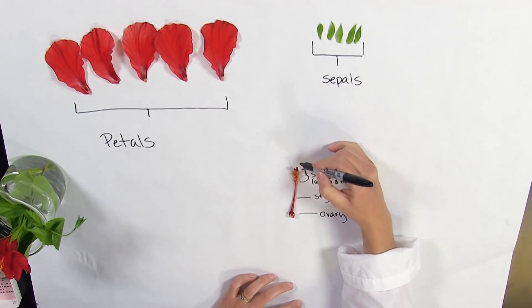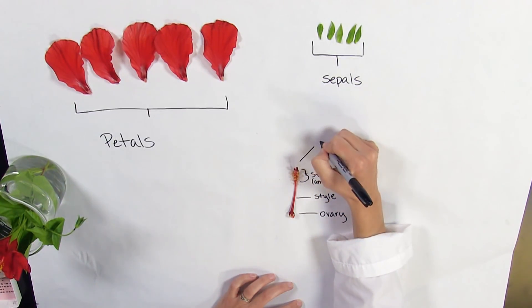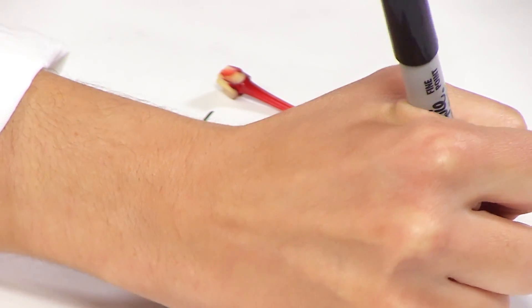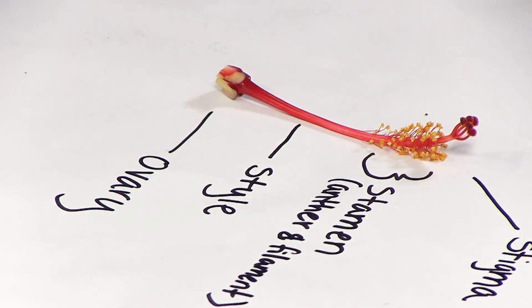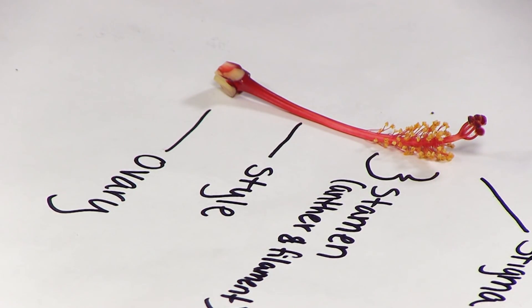Also indicate whether the flower comes from a monocot or dicot. See the instructions located in the learning unit associated with this lab for additional details on submitting this lab.